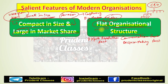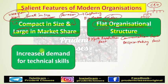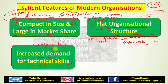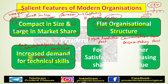The third salient feature of modern organizations is increased demand for technical skills. Modern organizations are now giving more attention and demanding technical skills. We are becoming a technical organization. The workforce they hire must be specialized in their tasks — best in the industry. The demand for technical skills is going high in modern organizations.